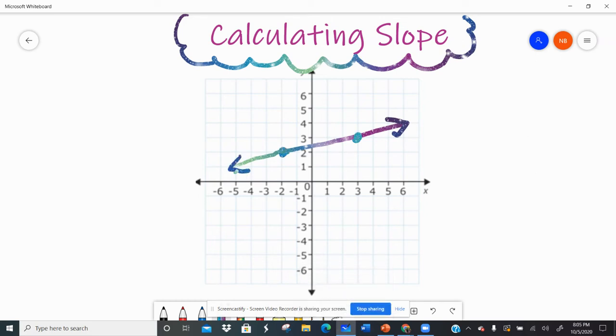All right, so say I have these two points and I want to calculate the slope of this line. Well, since the line is graphed for me, I could just go okay, I went up one over one, two, three, four, five, so my slope is one-fifth.